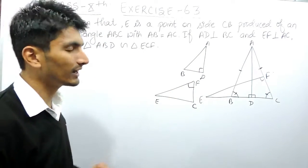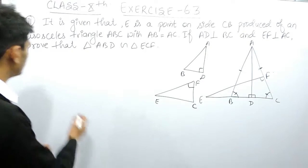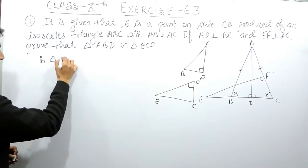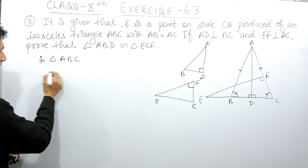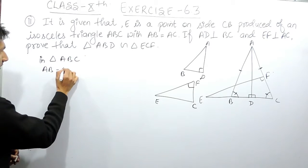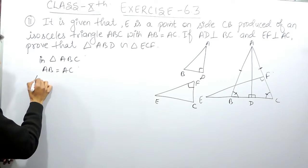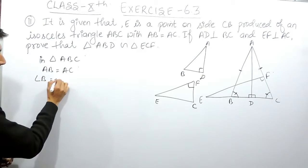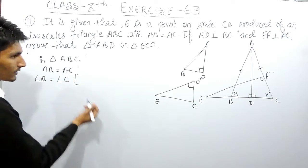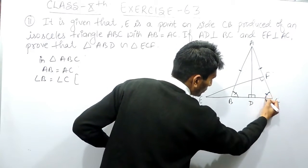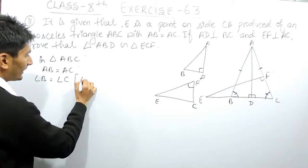And if these two are equal, then we can confirm that angle B must be equal to angle C. If these two lines are equal, then this angle must be equal to this because angles opposite to equal sides are also equal.